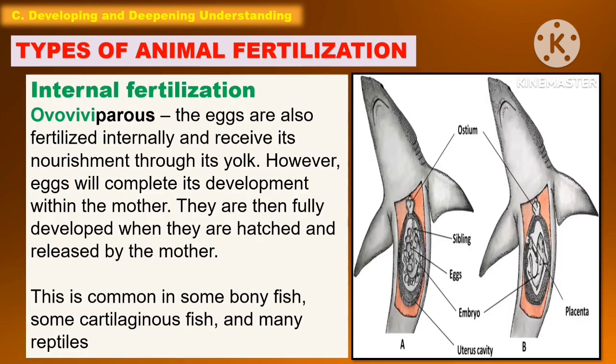Another type is ovoviviparous, where the eggs are also fertilized internally and receive nourishment through the yolk. However, the eggs complete their development within the mother. They are fully developed when they are hatched and released by the mother. This is common in some bony fish, some cartilaginous fish, and many reptiles.